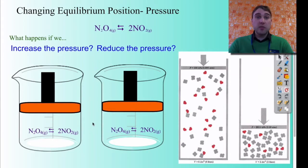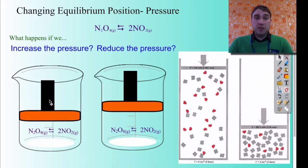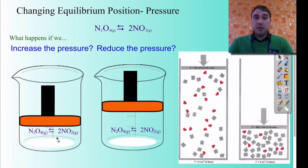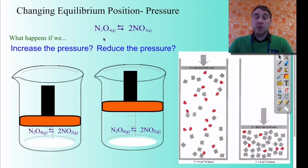So let's look at what happens when we change the pressure of a system at equilibrium. We have N2O4 and NO2. I've got one molecule of N2O4 on this side and two molecules of NO2 on this side — this is going to be important. If I increase the pressure using a plunger and squish it down, I've got the same number of molecules in a smaller space, so I've essentially increased the concentration. I want to shift equilibrium to reduce the total number of gas molecules. On the products side I've got two; on the reactants side I've got one. So the position of equilibrium shifts to the left, reducing the concentration of NO2 and increasing the concentration of N2O4. That reduces the internal pressure because I've gone from two molecules on one side to one on the other.